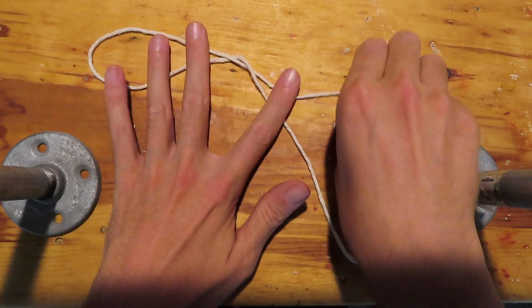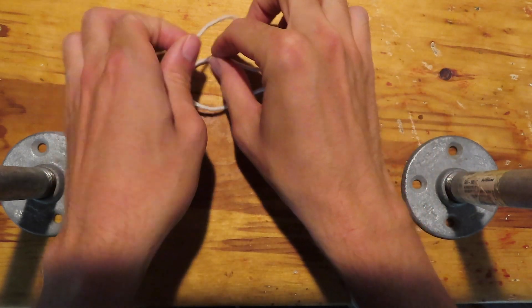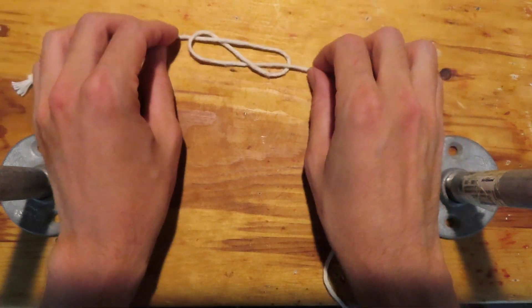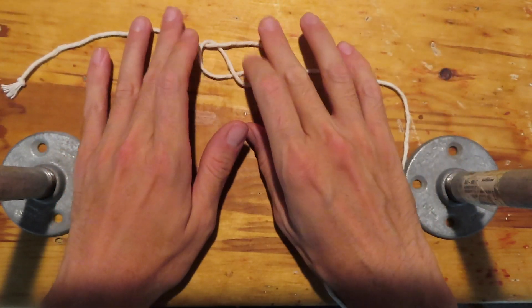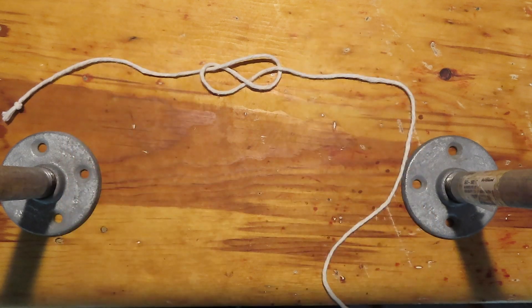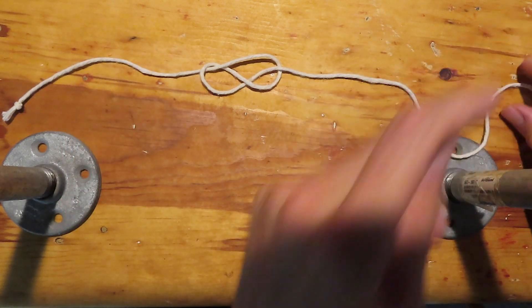We'll give the loop an extra twist first, and then wrap one end around the other. Did you get that? It's an overhand knot with an extra twist.